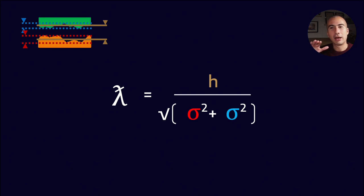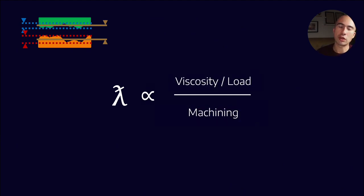If my film thickness, for example, is very low, then I can't tolerate very much surface roughness, because that goes into the denominator. Now when you look at all these terms, h is a function of viscosity and load, and the denominator, these sigma values, are a function of the machining capability. So you can think of this specific film thickness as being proportional to viscosity divided by load, and then all of that divided by machining tolerances.